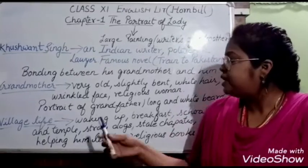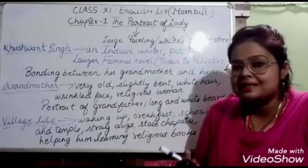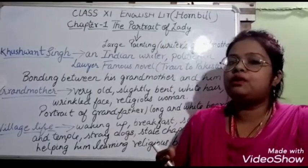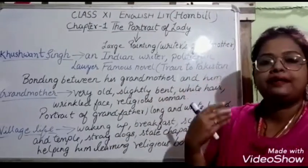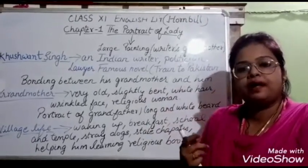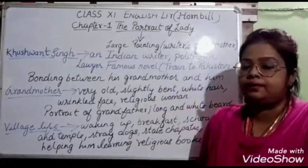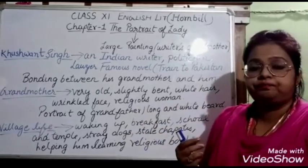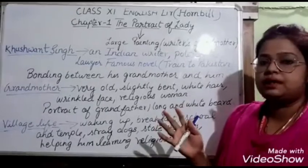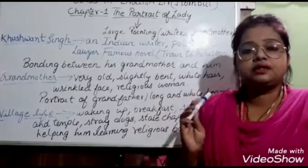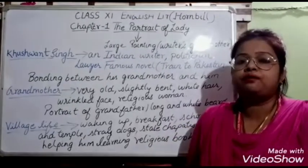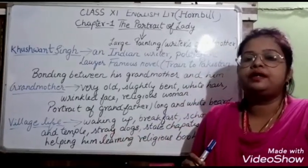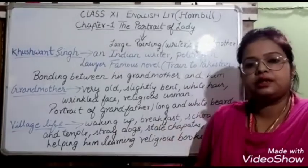The brief description of the grandmother: she is very old and slightly bent — not walking straight, as old people often are, sometimes with the help of a stick. She has completely white long hair and a wrinkled face. She is a very religious lady, always chanting hymns, reading religious books, and counting her rosary beads. The writer has never been able to imagine his grandmother as a younger person — he has always seen her this way, and to him she is a very beautiful lady despite her old age.